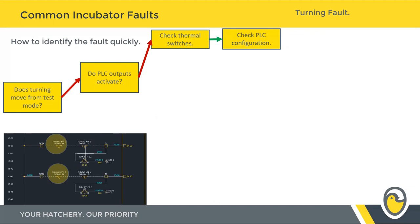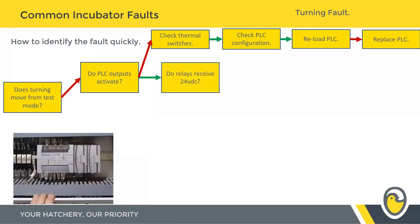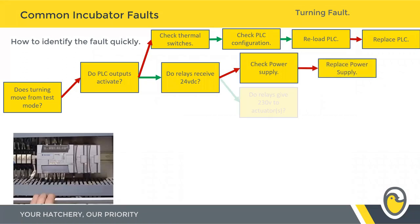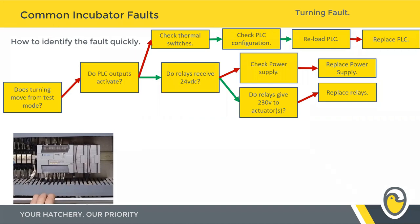If the thermal switches are good, check the PLC configuration to ensure nobody has accidentally changed a setting. If the configuration is correct, reload the PLC, then replace the PLC as an absolute last resort. If PLC outputs do activate, check whether they're activating the relays — is the relay receiving 24 volts? If not, check and replace the power supply. If it does receive 24 volts, does the relay then give 230 volts, or 24 volts for pneumatic actuators, out to the actuators? If not, replace the relays. If it does, you're down to replacing either the turning actuator or the solenoid in the case of the bottom pneumatic turning system.